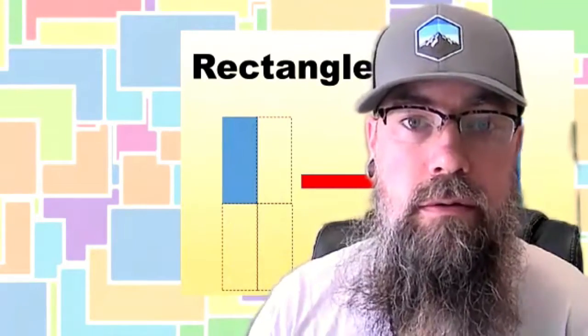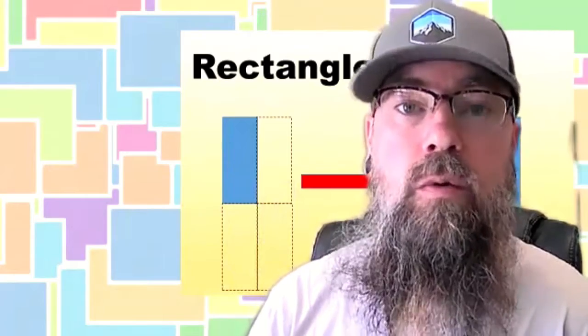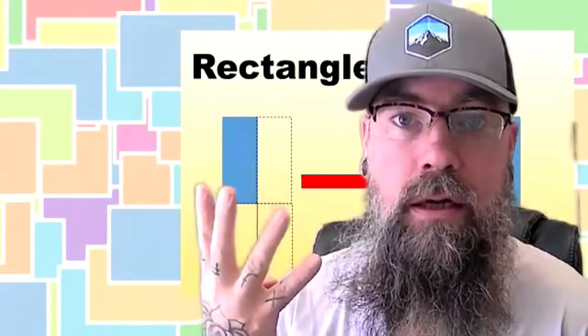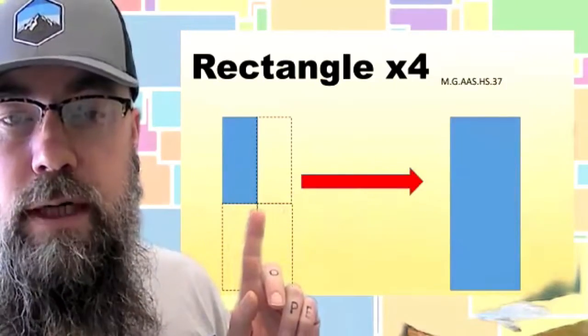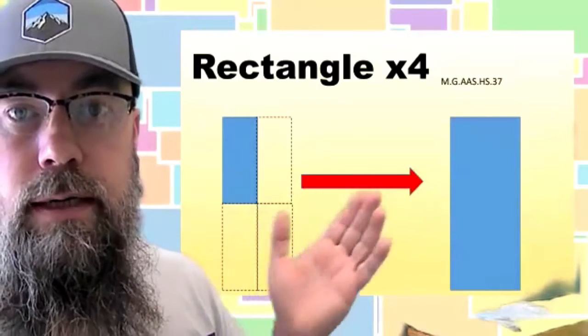Next, I have another rectangle, this one right here. We're going to take this one and quadruple it. That means I need four. If I take four of these rectangles and put them together, I get a quadruple size rectangle.